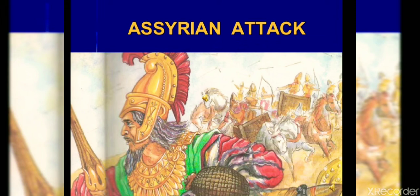Whatever astonished or amazed them, they gave it some kind of power and began to worship it. For example, when darkness came and the sun rose, they felt the sun had great power — so in most civilizations you will find the sun established as a deity. Similarly, the moon was seen at night so the moon also became a deity. This pattern was common across the earliest civilizations — Mesopotamian, Chinese, and Egyptian.